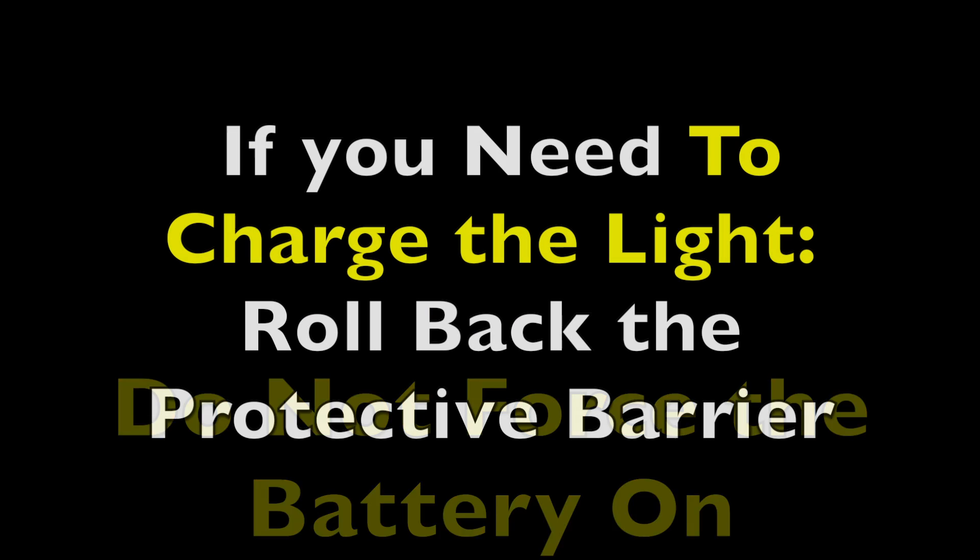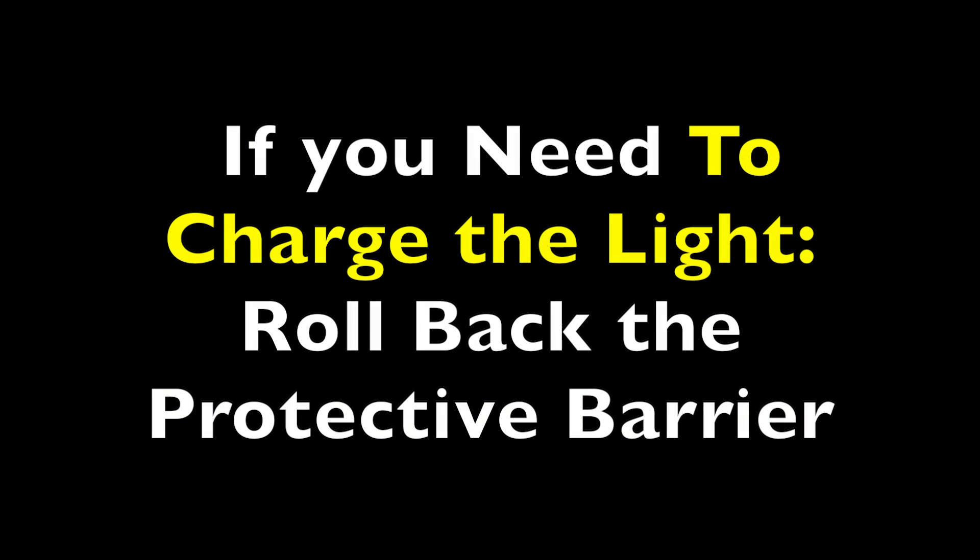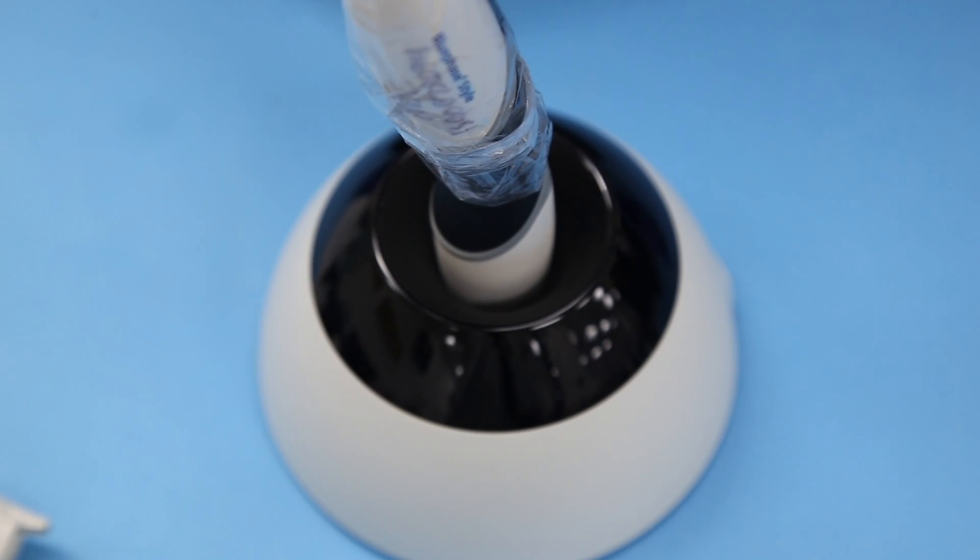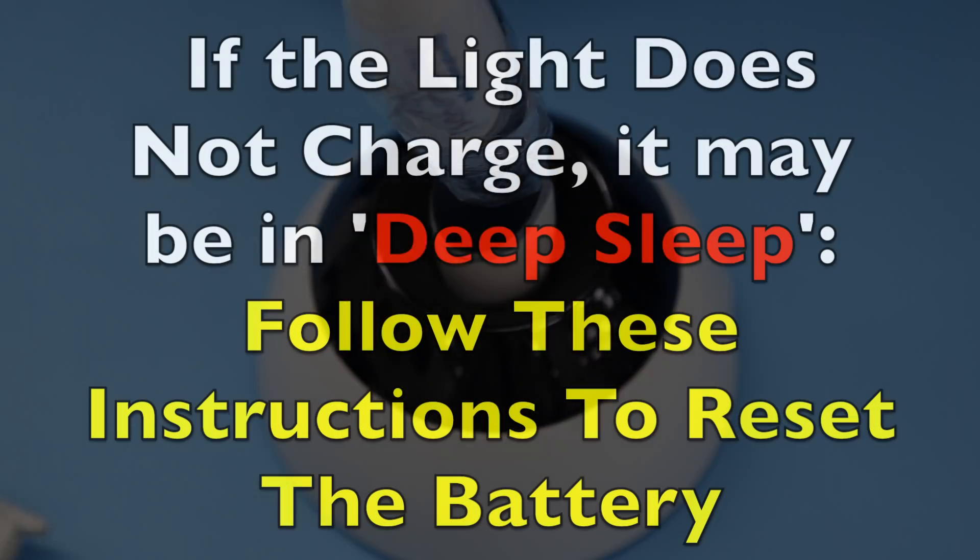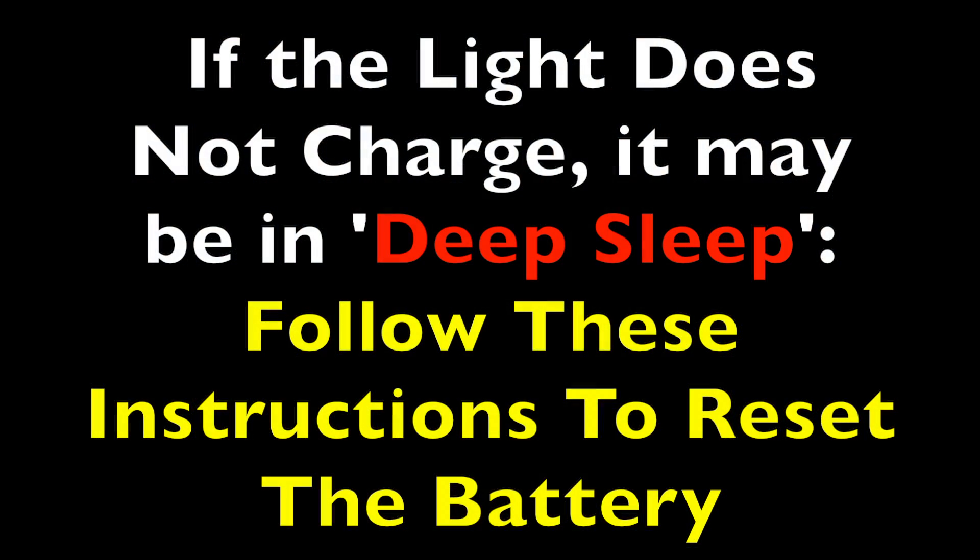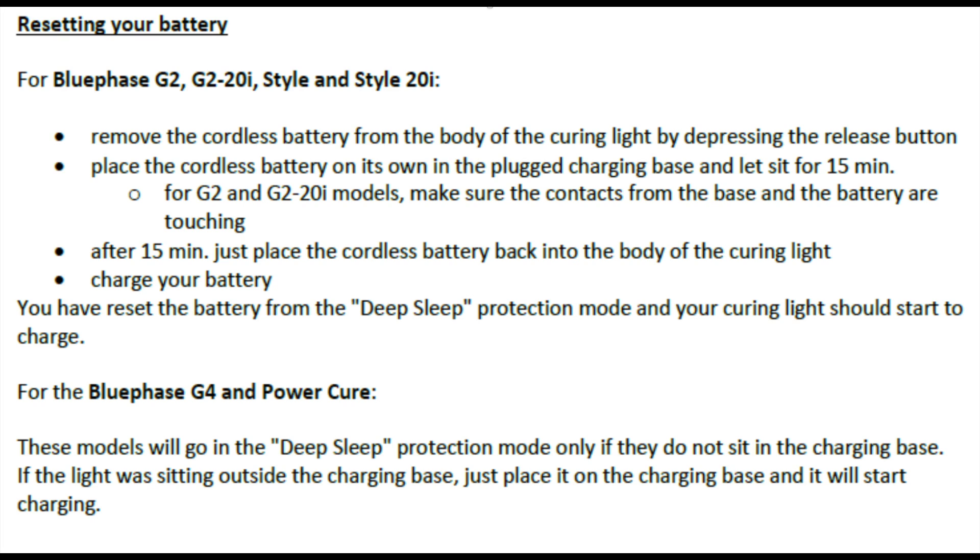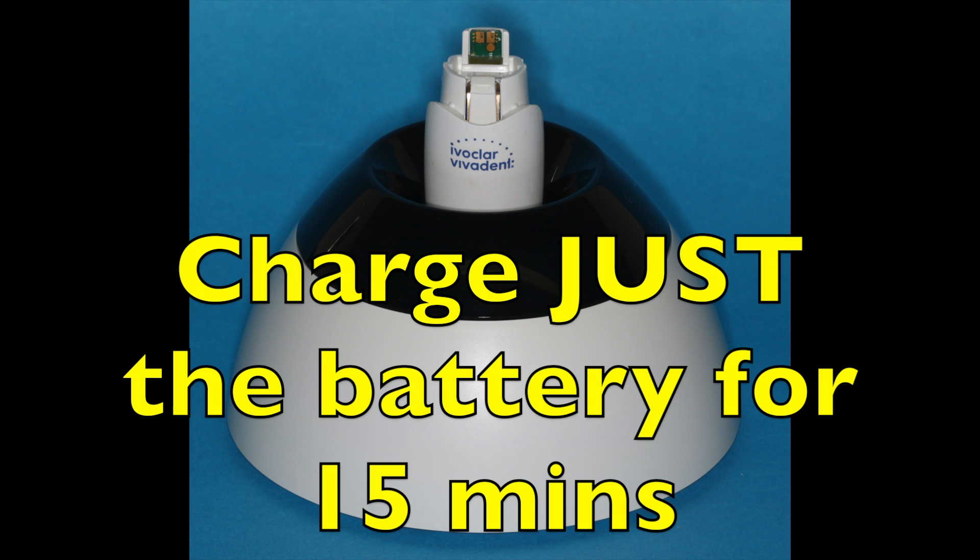I find it charges a lot better if you roll back the barrier. If you haven't used the light for some time, it may have gone into the deep sleep mode. This is easily fixed by following the information that's available on the website. You just need to remove the battery from the curing light and then charge the battery alone for about 15 minutes. After which time you can reconnect the battery on the light and it should work just fine.